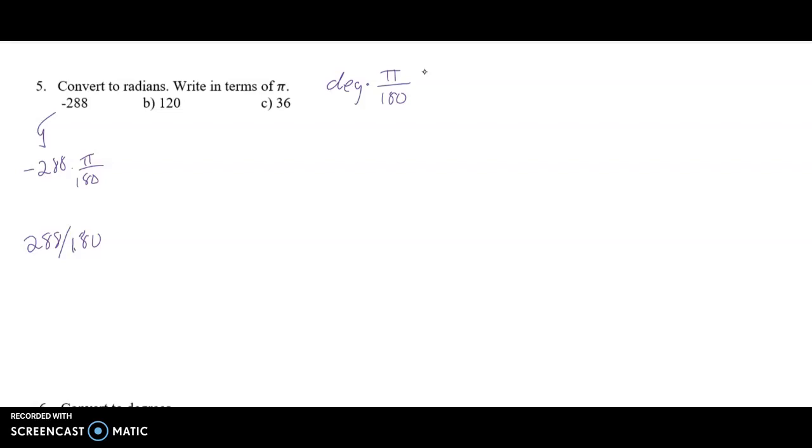If you do that, it'll convert it to a fraction and give us 8 over 5. Not 8 over 8, 8 over 5. So that is the simplification of the 288 over the 180, and I need to include that pi. So it is negative 8 pi over 5. And that's it.